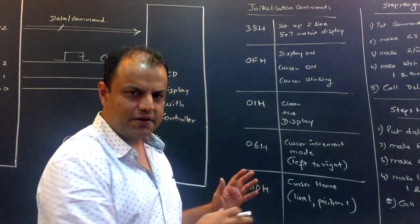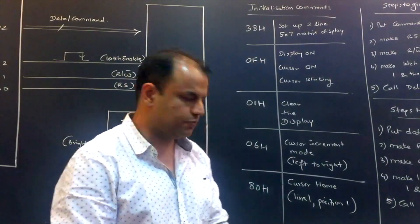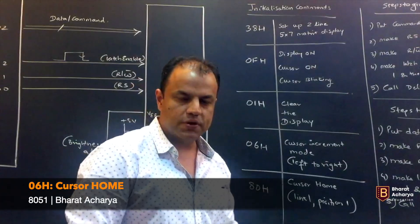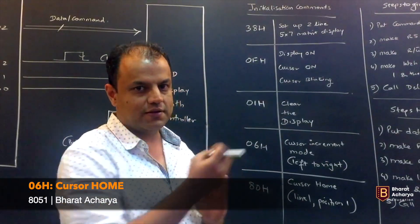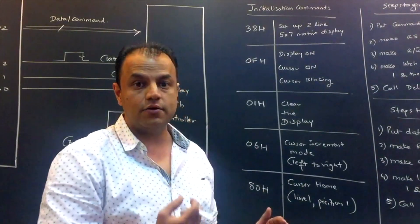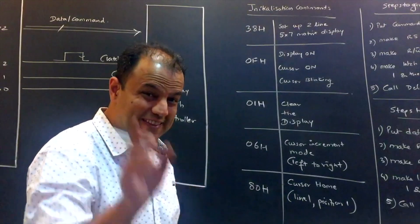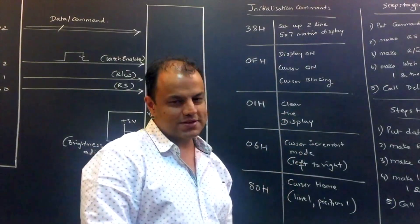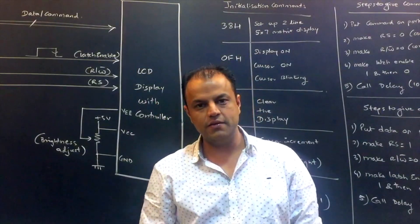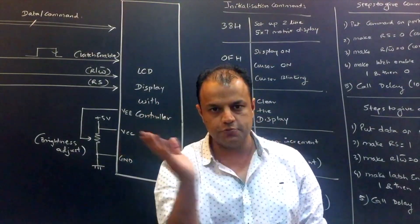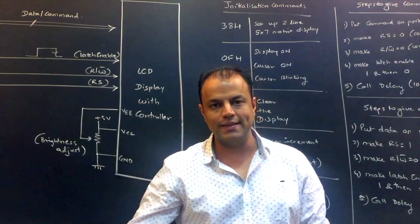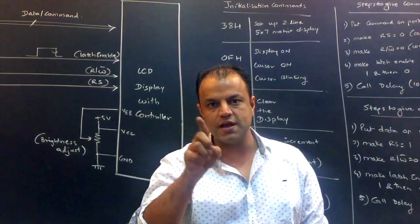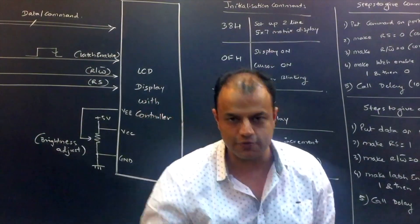Then 80. 80 is cursor home command. When you give cursor home, it goes to line 1, position 1. Now what is position 1? The right most position or the left most position? That depends upon whether your display is right aligned or left aligned. If it is left aligned, then it is the left most position and vice versa. That's why it is necessary to first give the increment mode and then give the home command. So did you understand the sequence? First thing, you set up the display. Second, you turn it on. Now clear the display so that the garbage is wiped out. Now choose your alignment and then finally give the home command.